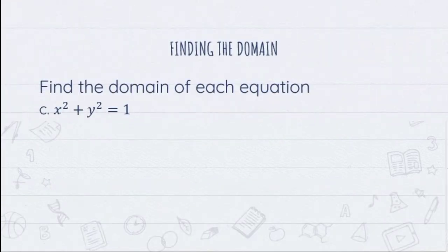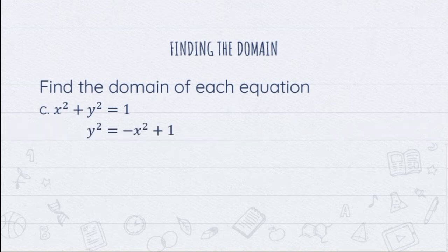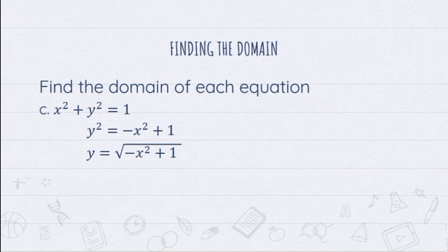Let's proceed to letter C, x squared plus y squared equals 1. The first step here is to isolate y on one side, so we'll transpose negative x squared to the other side. So we have y squared equals negative x squared plus 1. The next step is to place square root on both sides, so we'll have y equals the square root of quantity negative x squared plus 1. This is a radical function.